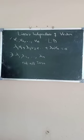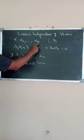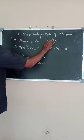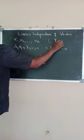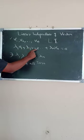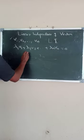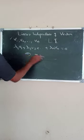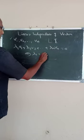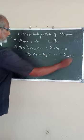Third definition: a set of vectors V1, V2, ... Vn is said to be linearly independent if lambda 1 V1 plus lambda 2 V2 plus ... plus lambda n Vn equals zero implies lambda 1 equals lambda 2 equals ... equals lambda n equals zero.